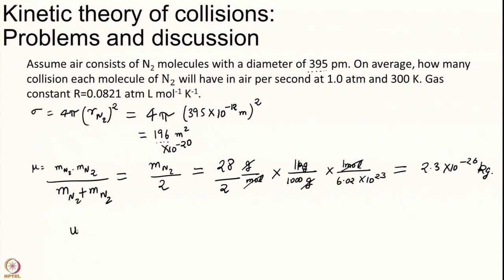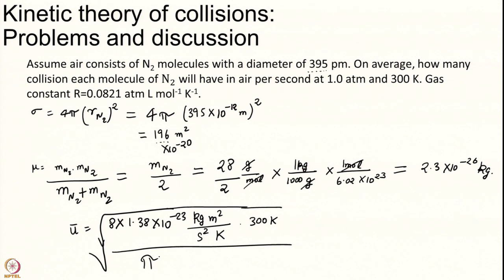Finally I have to not finally but I have to calculate that thermal speed as 8 KB 1.38 into 10 to the power of minus 23. What is the unit of KB? Kilogram meter square second square Kelvin 300 Kelvin divided by 8 KT divided pi into the mass.